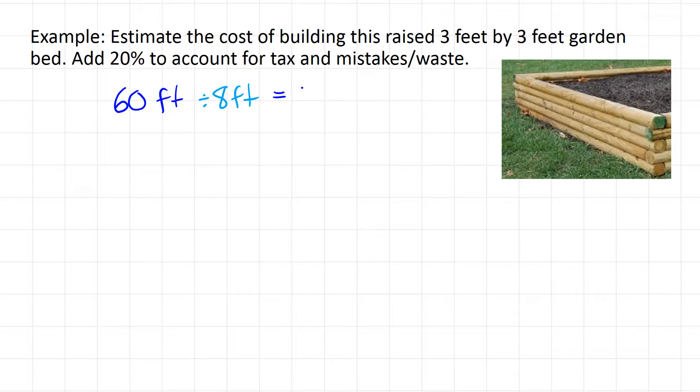This will give us a total of 7.5 timbers that we need to buy. But again, we can't buy half a timber, so we have to buy 8 timbers total.